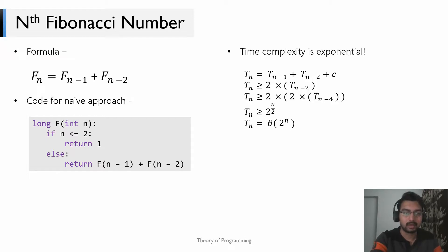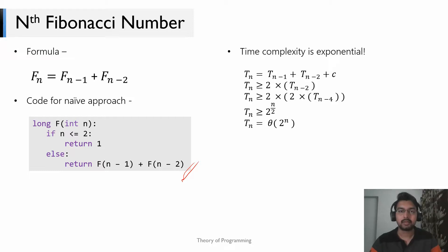The code for a naive approach solution is very simple but terrible at performance, because it has exponential time complexity. To prove this, let T(n) be the time it takes to compute the nth Fibonacci number. So T(n) equals T(n−1) plus T(n−2) plus some constant C.